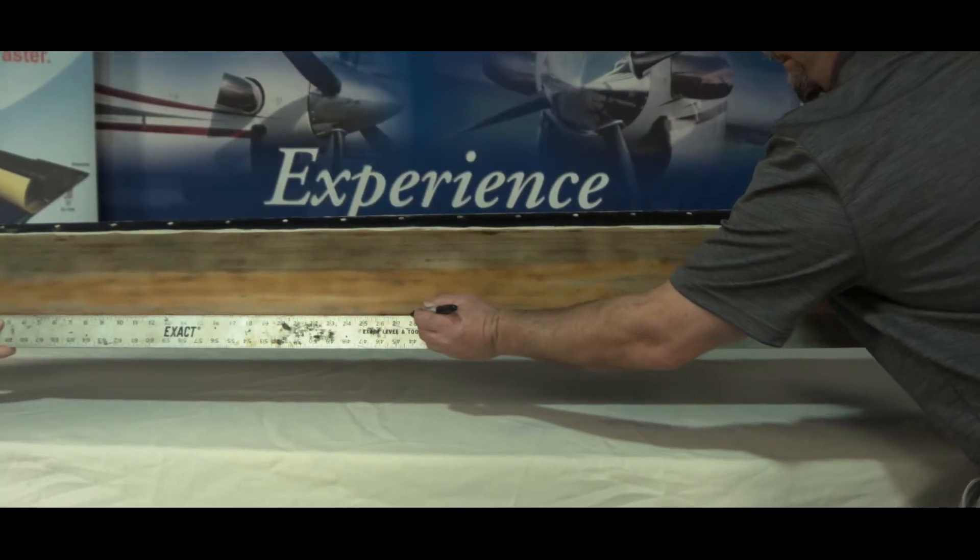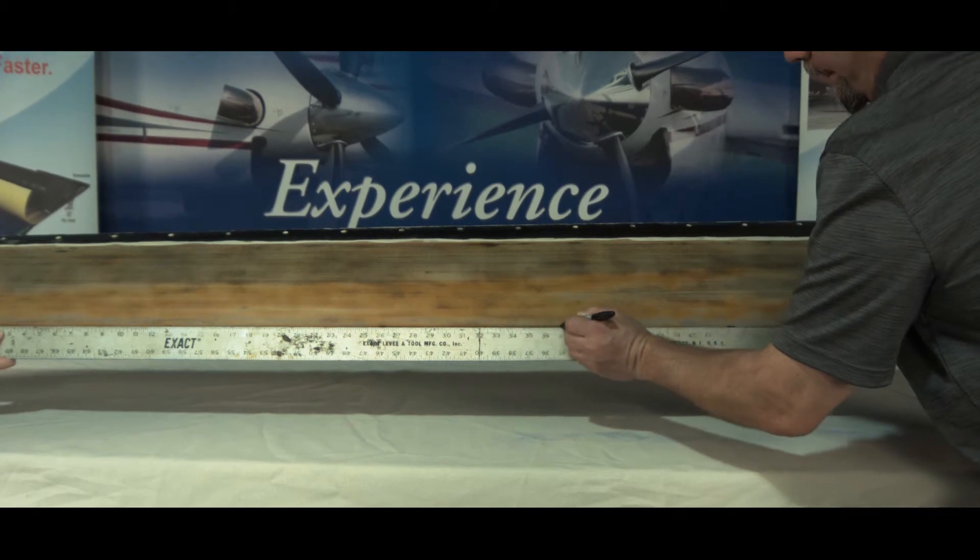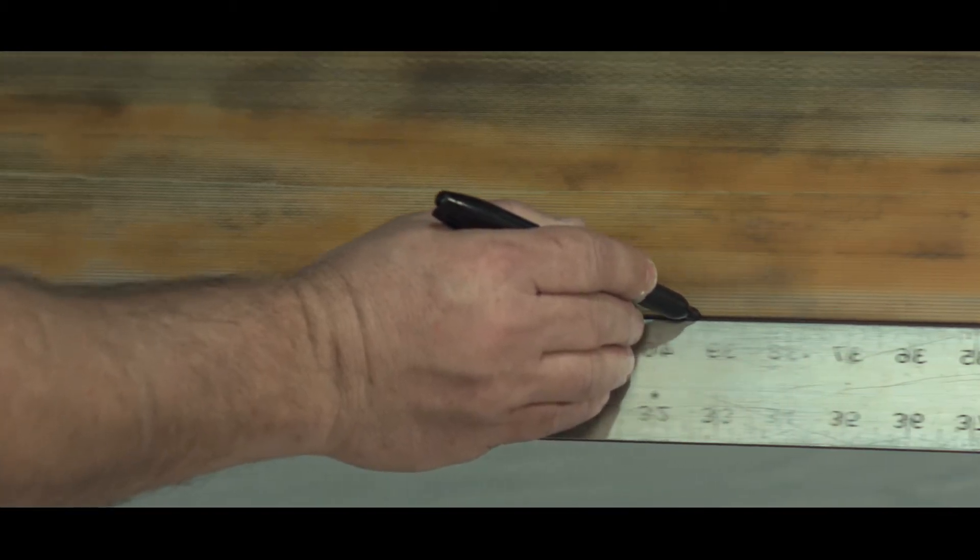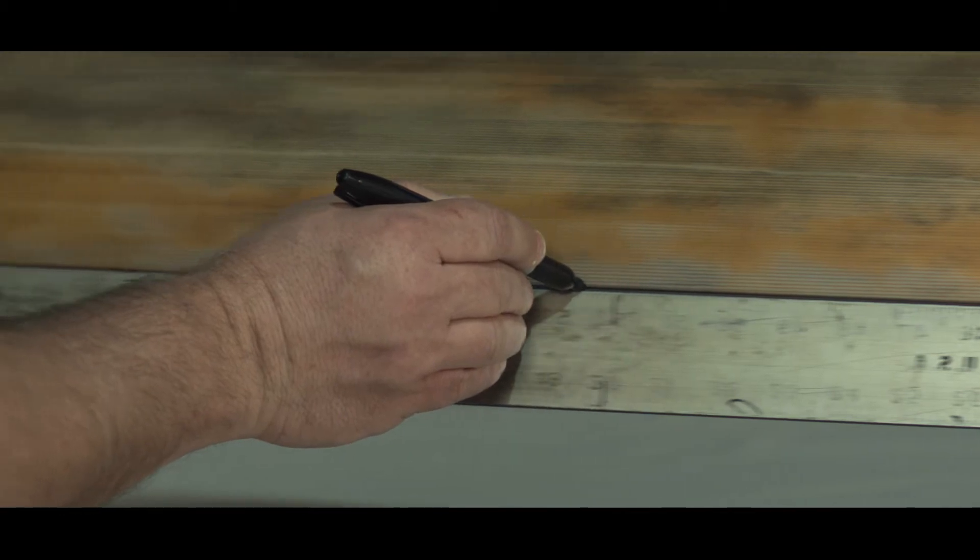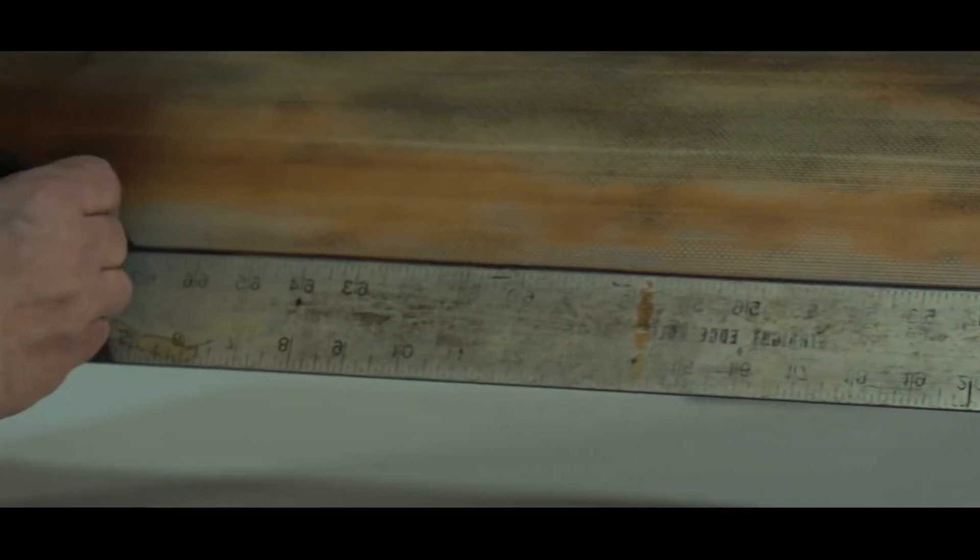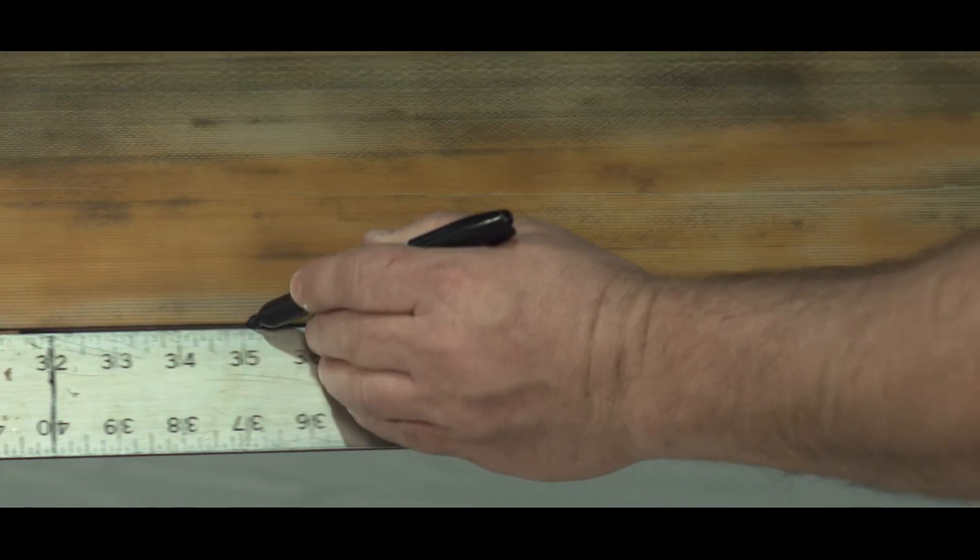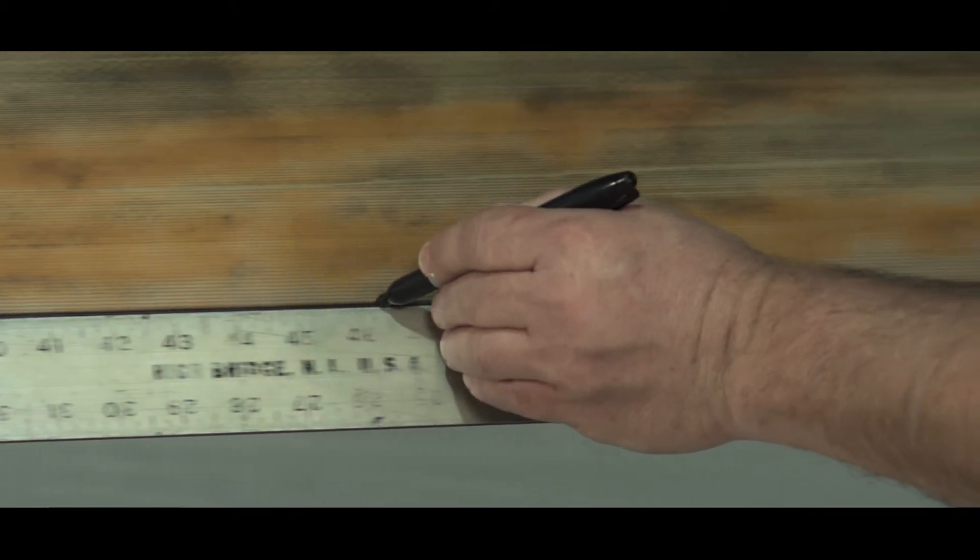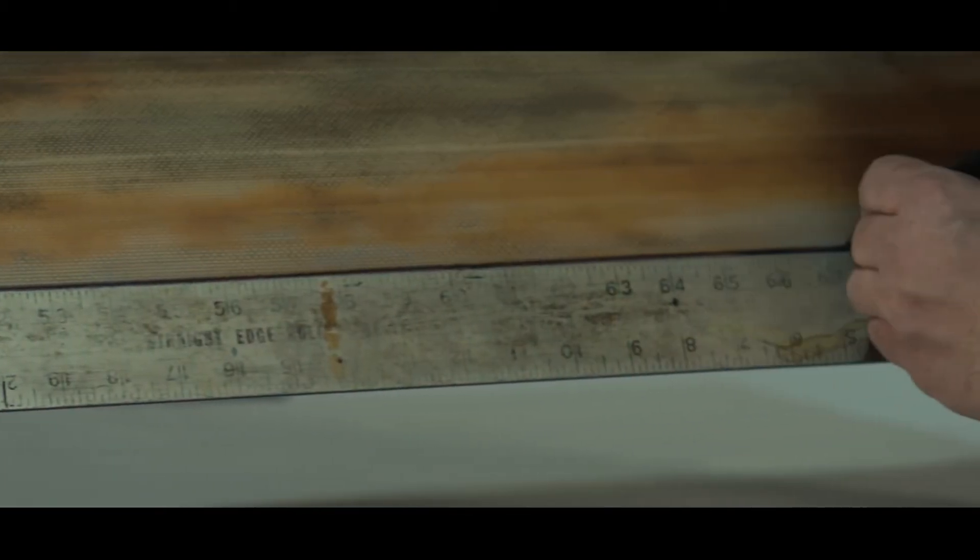Finally, using a straight edge, here we use a metal yardstick, mark the center line with permanent marker as one continuous line across the leading edge. You will use this center line during installation to match up with the center line on the backside of the de-ice boot.